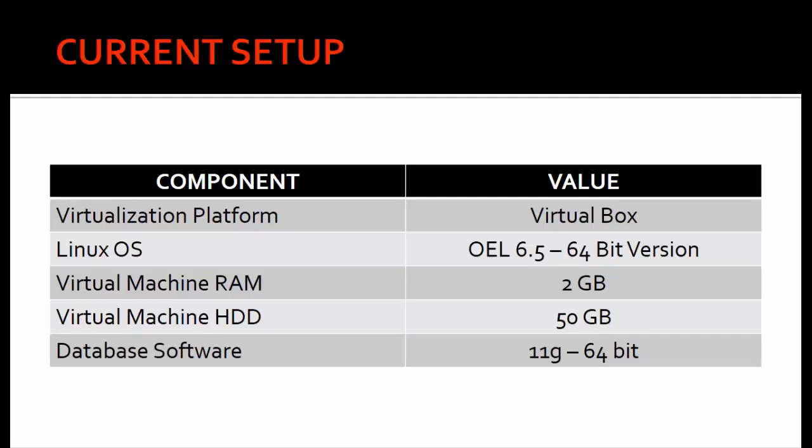We are using VirtualBox as our virtualization platform. I have already created a virtual machine with the below configuration. In case you are familiar with VMware, you can configure the same on it. I have installed OEL 6.5 64-bit version, allocated 2 GB RAM and 50 GB hard disk. Going forward, we will be installing Oracle 11G 64-bit version for Linux on our virtual machine.